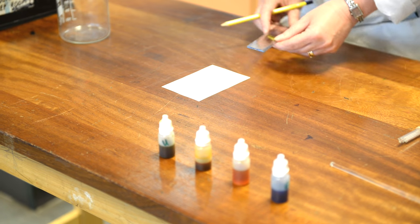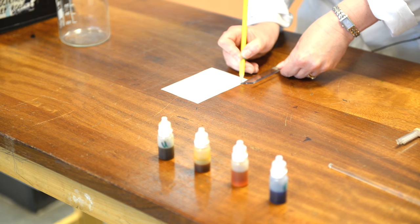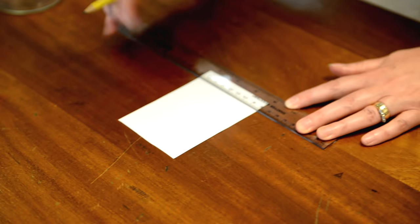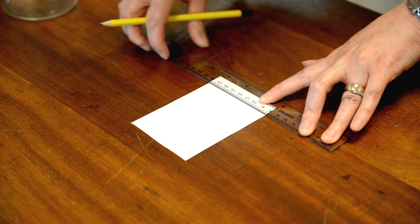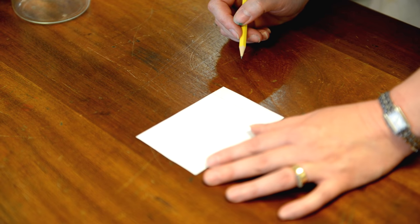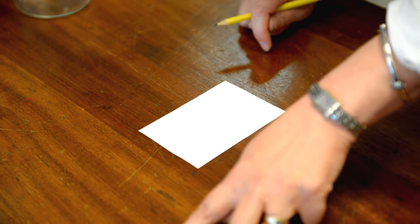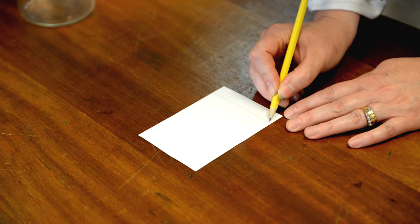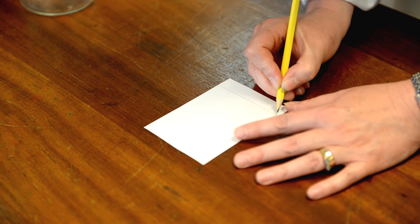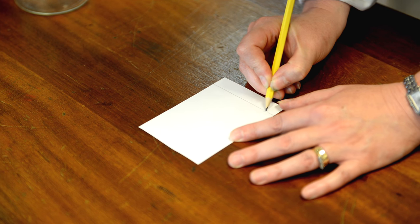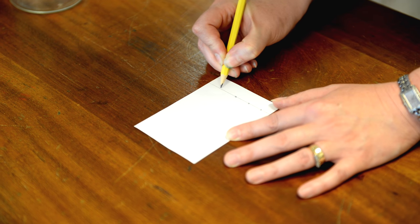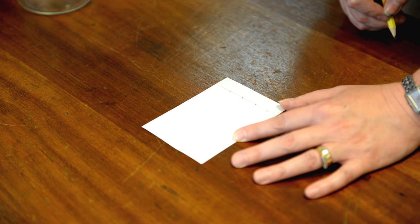So we take a ruler and roughly two centimeters from the base of the paper we draw a straight line across the bottom. Then onto that we're going to mark four points where we're going to place four food colorings. We don't want to go too close to the edge because the separation doesn't work so well near the edge. So about one centimeter in we'll put our first cross and then evenly place our other crosses going along the baseline.